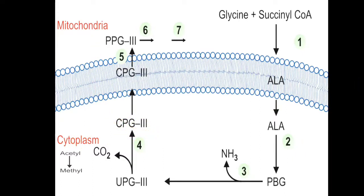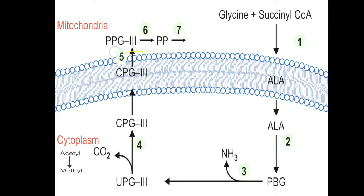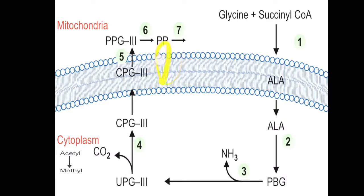Inside the mitochondria, CPG3 is converted into protoporphyrinogen (PPG). Up to this stage, porphyrinogens are all colorless compounds. Once PPG is converted into protoporphyrin by PPG oxidase, they become colored compounds. Finally, iron — Fe²⁺, the ferrous form — is added to protoporphyrin, converting it into the heme molecule. That heme can then combine with globin to form hemoglobin.